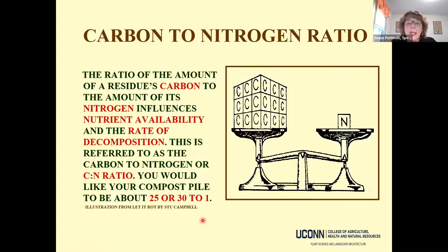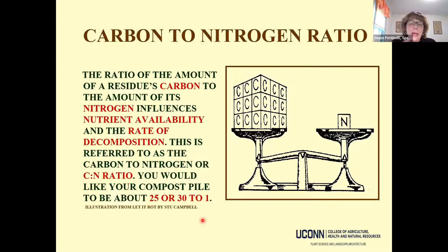For a hot compost pile, layering makes sense to achieve the right proportion of materials. You're balancing browns and greens, aiming for a starting carbon-to-nitrogen ratio of about 25–30:1. An online calculator can take the volumes of your different materials and calculate the ratio — you could use five-gallon buckets or wheelbarrows as your units of measurement.